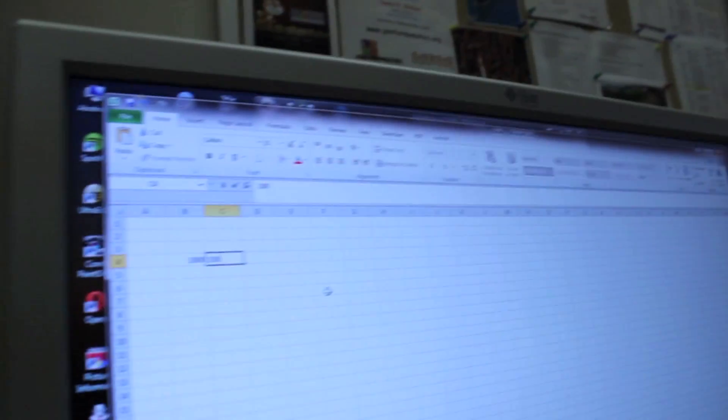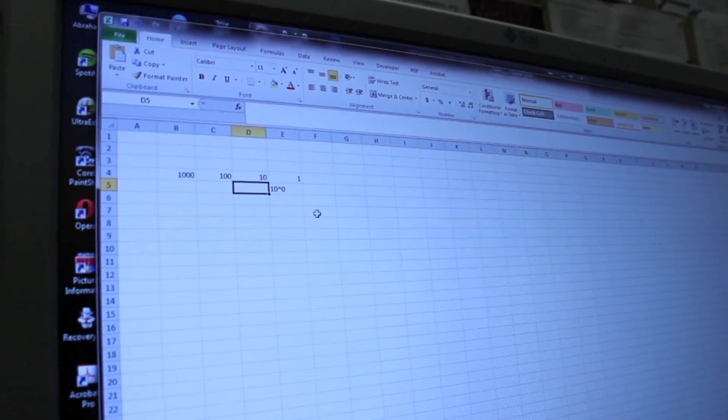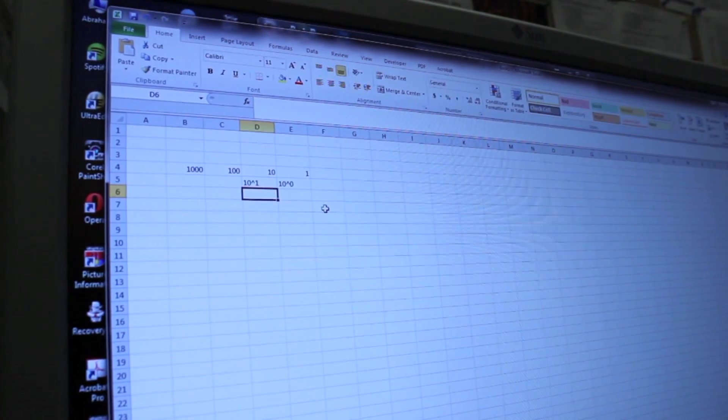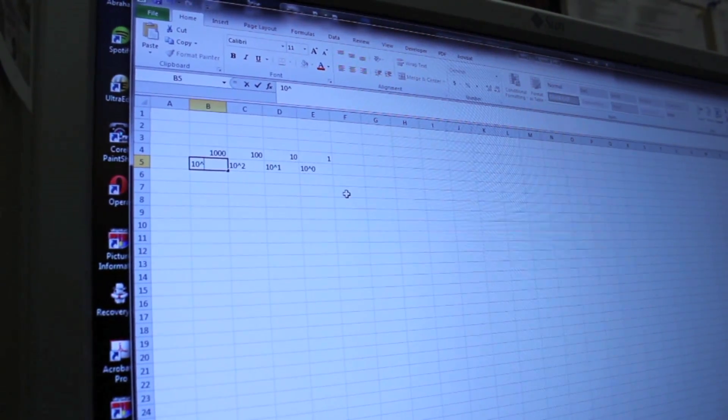So if we take the tens number system, let's go here, this is the thousands place, this is the hundreds place, this is the tens place, and this is the ones place. This is 10 to the zero power. This is 10 raised to the first power. This is 10 raised to the second power, and this is 10 raised to the third power.